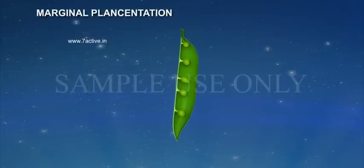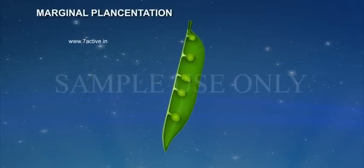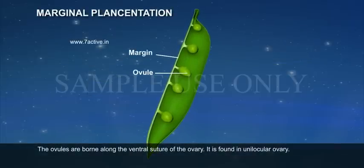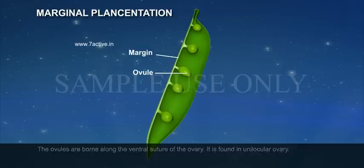Marginal placentation: The ovules are borne along the ventral suture of the ovary. It is found in unilocular ovary. Example: Dolichos.